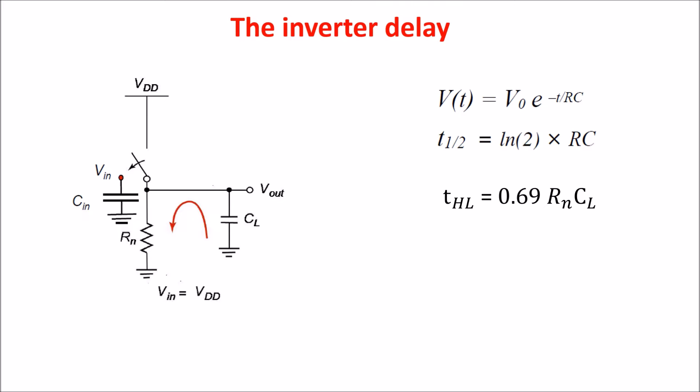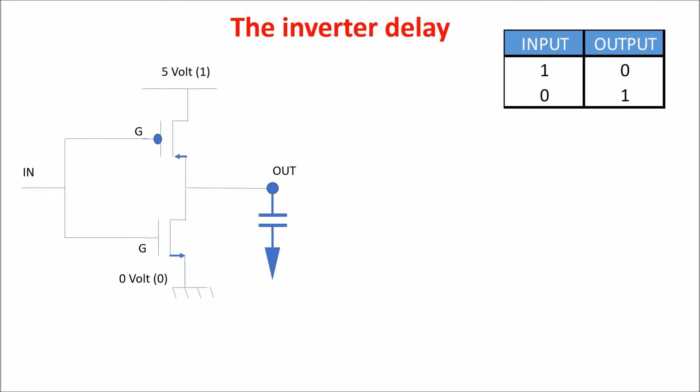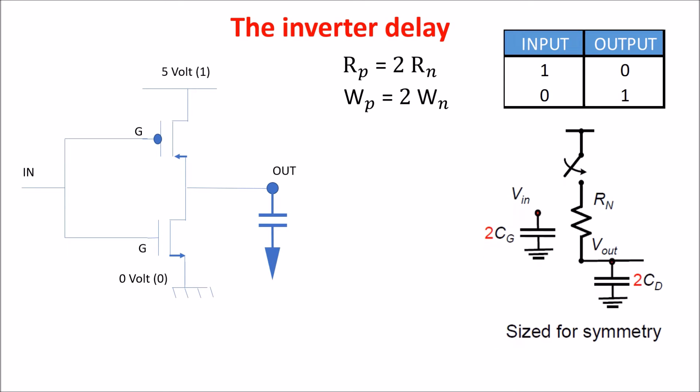We saw that if we keep the minimum size for all the transistors, the time of the high-low transition is different from the time of the low-high transition because the mobility of the electron is the double of that of the holes, so the resistance of the N-channel is half of the resistance of the P-channel MOSFET. But if we double the PMOS width in respect to that of the NMOS, we obtain that Rp now is equal to Rn, so the times high-low and low-high are now balanced.